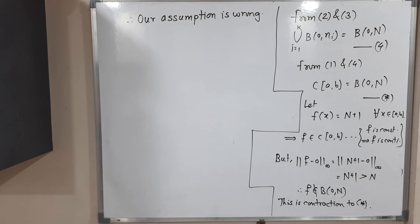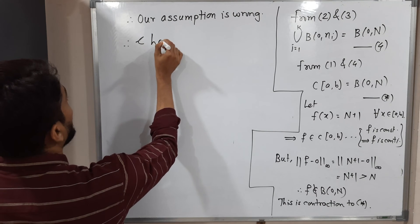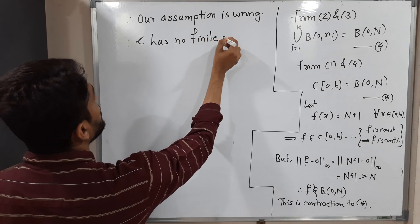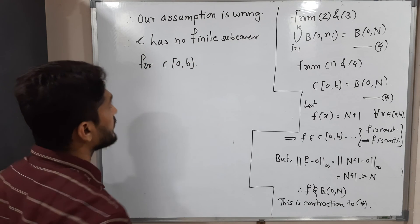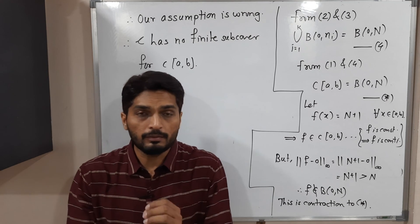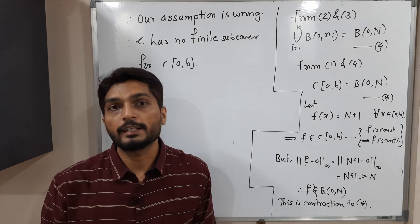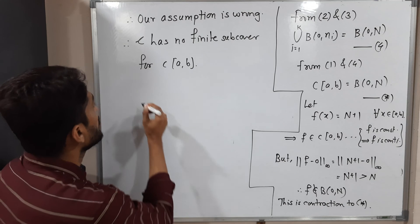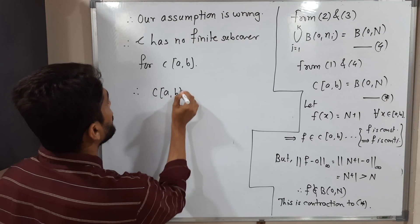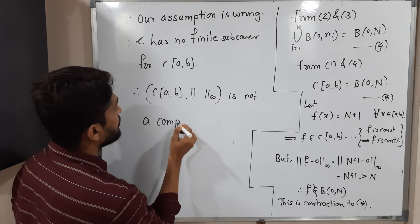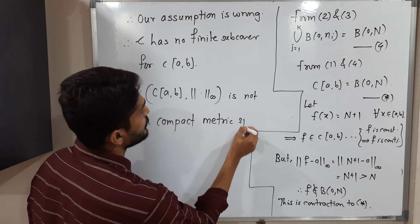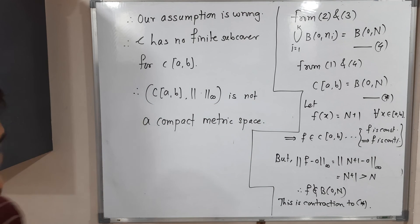Therefore script C has no finite sub-cover for C[A,B]. Since we have found an open cover with no finite sub-cover, we conclude that C[A,B] with the norm-infinity is not a compact metric space. This completes the example. Thank you, see you next time.